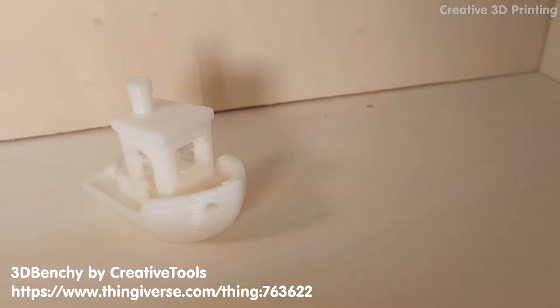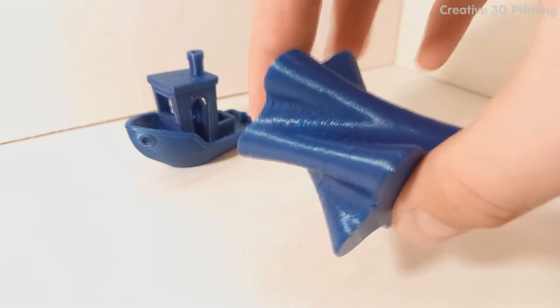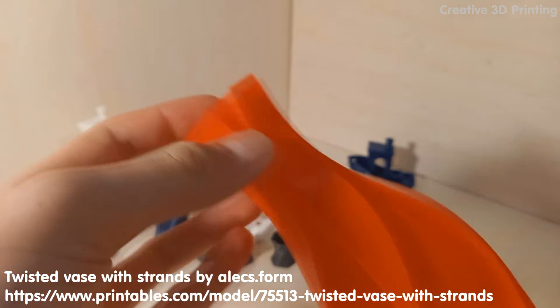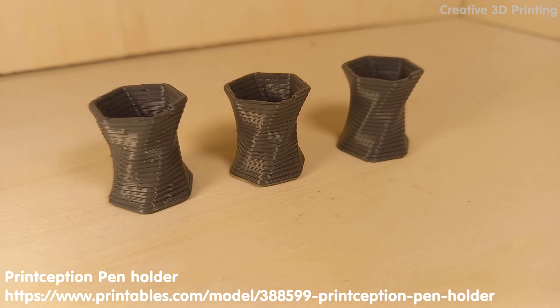I started by printing a traditional test print, the 3D Benchy, and with the boat I could fine-tune my settings. After this I printed a number of other things including this large vase.